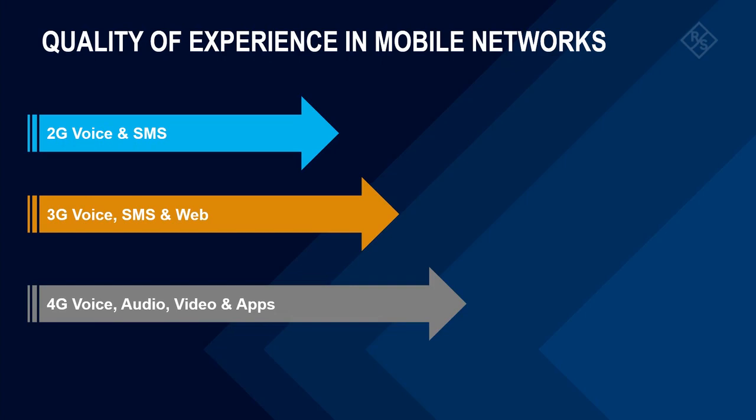Let's look a little bit in the past. When we look at 2G, 3G, 4G, we experienced over time a quite big increase in the number of services and applications, and in consequence also in the complexity of the ecosystem. That had influenced significantly the way how we test. While at the beginning in 2G times, where we had just voice and SMS services, the main focus was on testing the physical parts of a network — testing spectrum, testing coverage, testing interference.